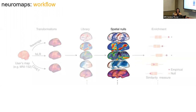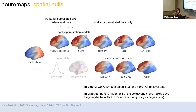At this point, we have our empirically collected map and we can compare it to a bunch of other data. The null models can be used for anything at the parcellated, surface, or voxel level — it doesn't matter what the data is, just how it's provided. It's modular: you don't have to use the spatial nulls only with Neuromaps library data. You can have your own data and just want to use it for the spatial null calculations.